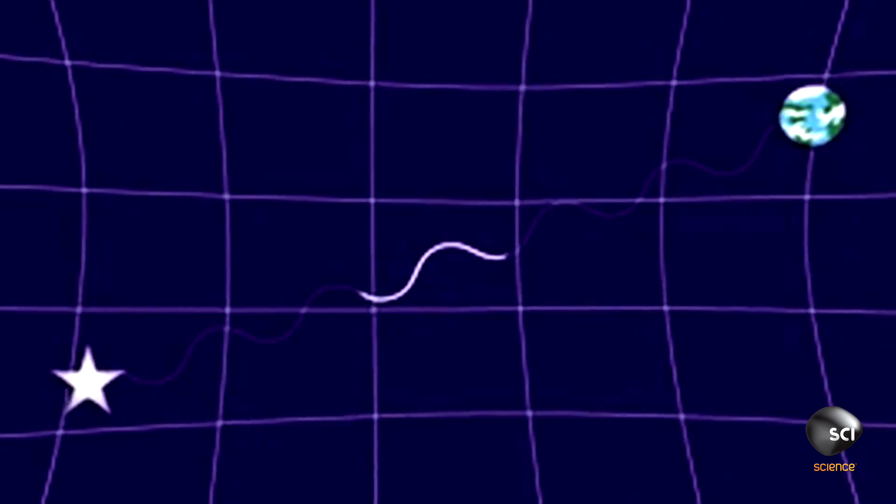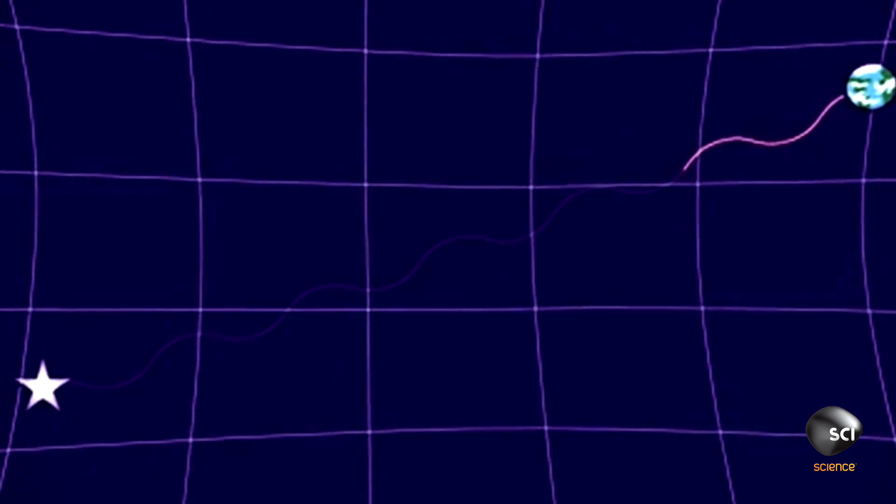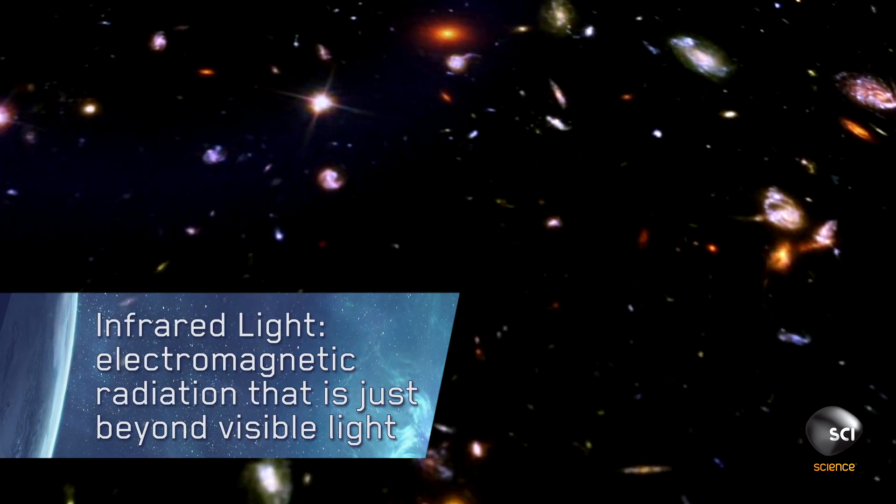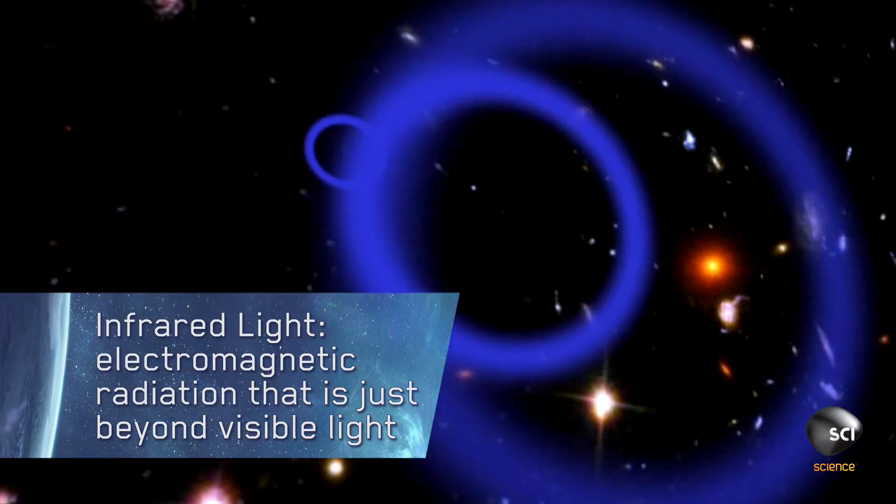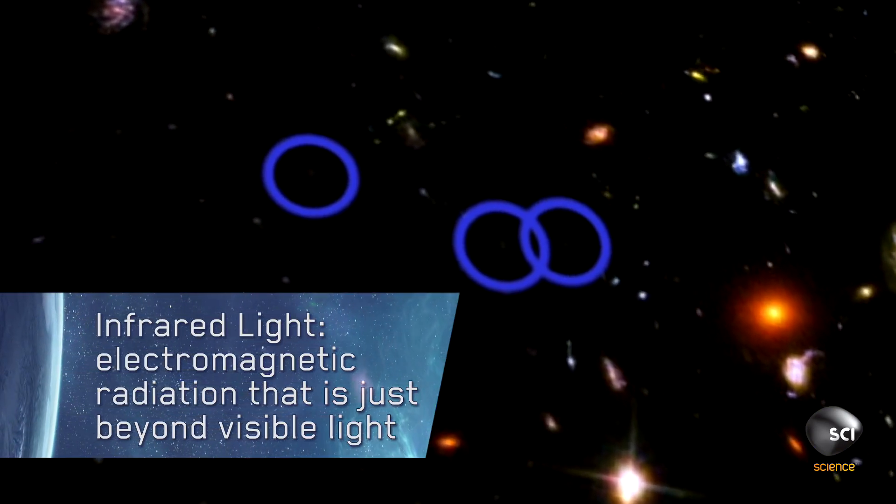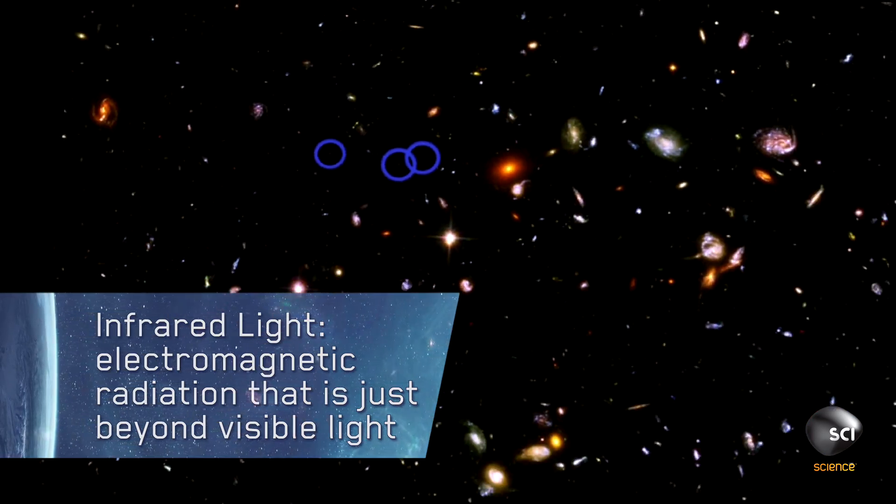As the universe is expanding over time, the light is literally stretched. And so longer stretched wavelengths of light are redder. And the most distant galaxies, the light from those galaxies has been redshifted so much that you can no longer see them in visible light.